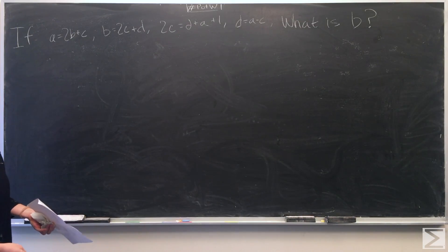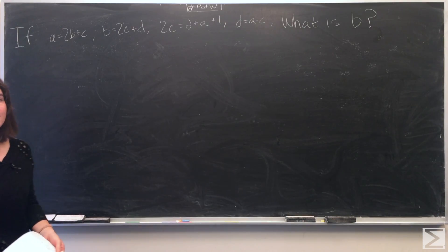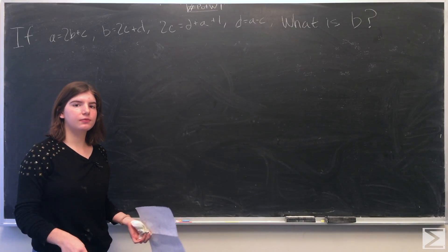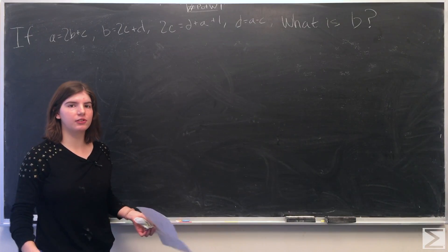So we're given four equations and we have four different variables: a, b, c, and d. We can solve using Gauss elimination if you want. We're going to solve this problem just using substitution.